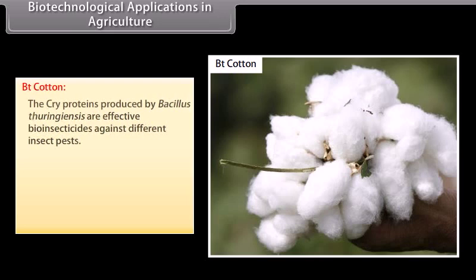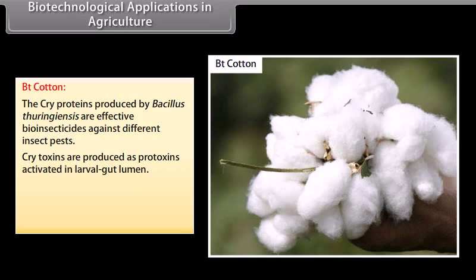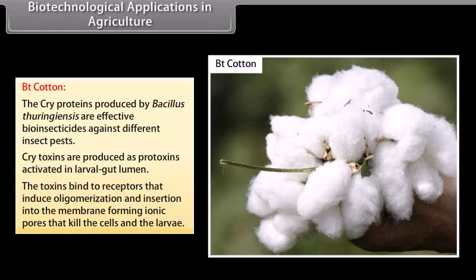Biotechnological Applications in Agriculture — BT Cotton: The cry proteins produced by Bacillus thuringiensis are effective bio-insecticides against different insect pests. Cry toxins are produced as protoxins activated in larval gut lumen. The toxins bind to receptors that induce oligomerization and insertion into the membrane, forming ionic pores that kill the cells and the larva.